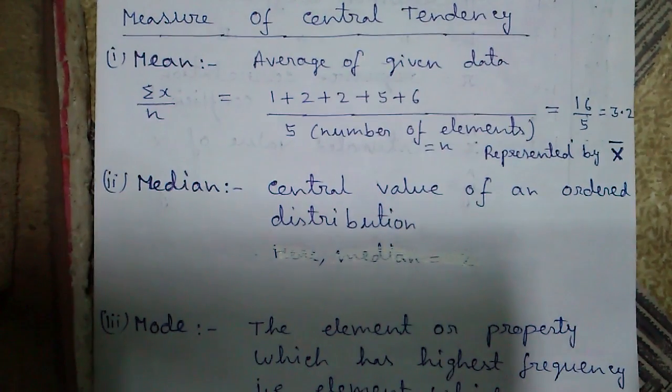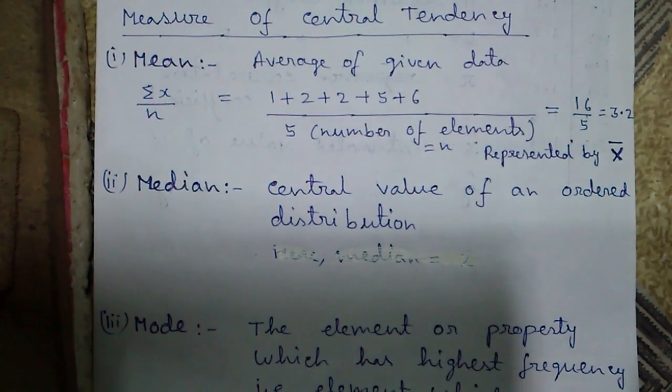Median. The median is the central value of an ordered distribution. If you arrange the values in increasing or decreasing order, then the median is the middle value of the distribution. In case of even number of elements, the median is given by the mean of the middle two elements.